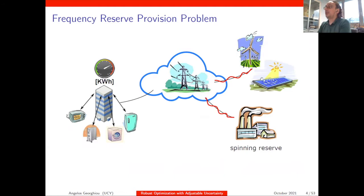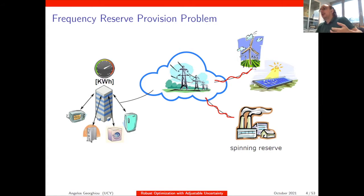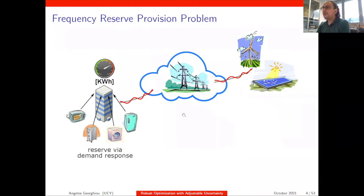With the addition of more renewable energies, and the fact that we cannot really predict their output, there is an increasing need for spinning reserves. Spinning reserve is literally as the name suggests: a spare generator that spins, maintaining the momentum to deliver energy if needed. If the power from renewables drops, the system operator goes to the spinning reserve and asks it to produce more electricity, or the reverse — decrease production — to manage the system.